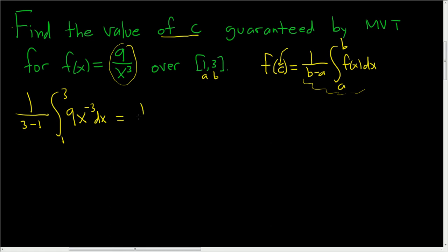So this is 1 half. And then let's go ahead and integrate this thing. So we'll add 1. So 9 hangs out. And we have 9x to the negative 2 over negative 2. And we're going from 1 to 3.